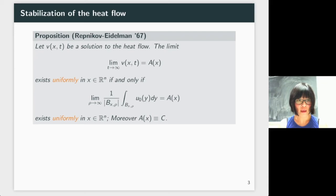Uniformity is in orange because you can put it in or take it out. So if you have a uniform limit or a uniform average over larger balls, then your limit is uniformly in x. If you don't have a uniform second limit, then you don't have a uniform first limit. Moreover, the limit A(x) is going to be constant if it exists.